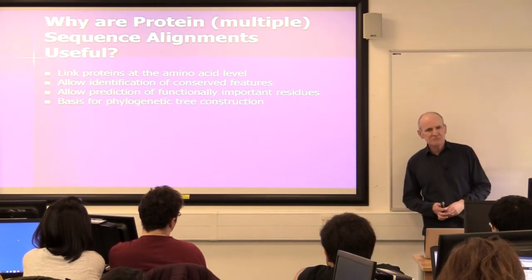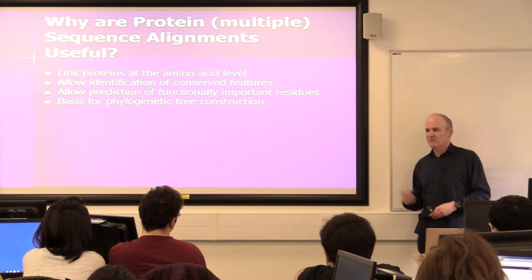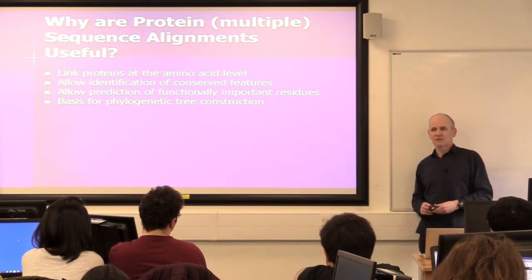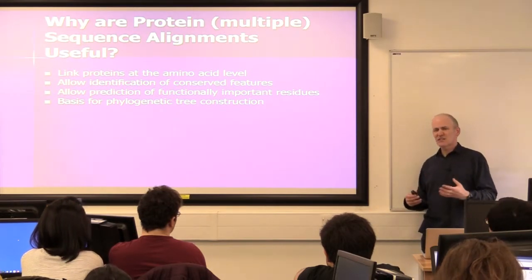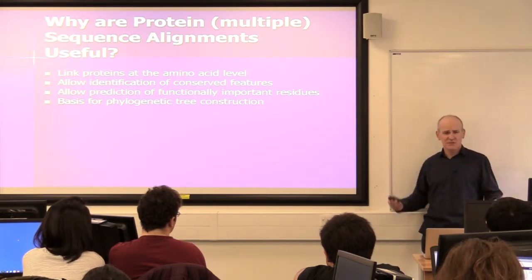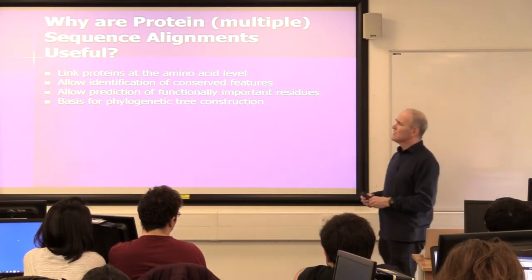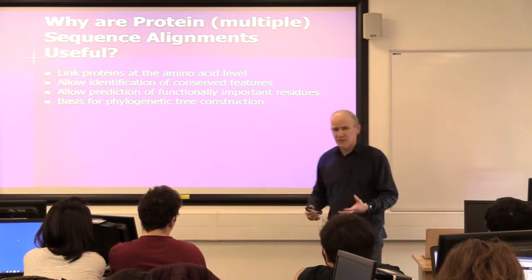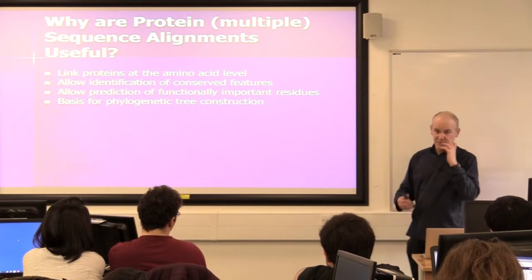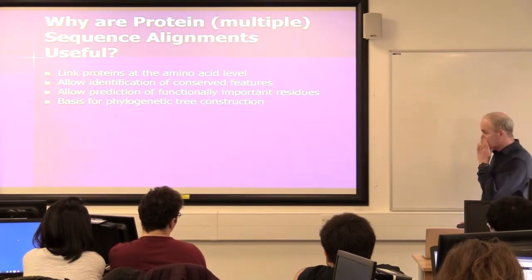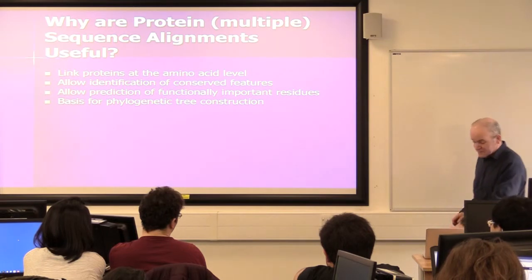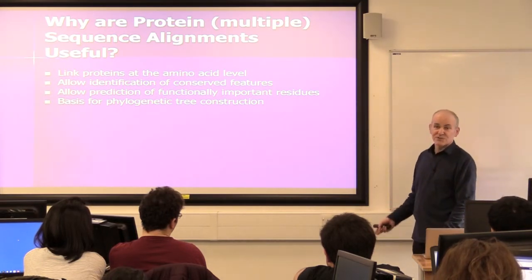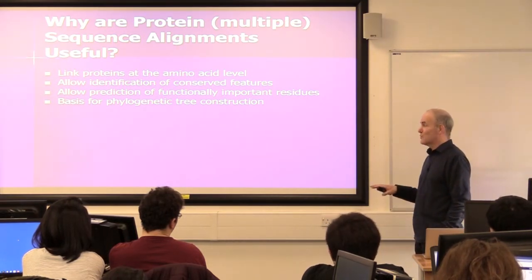Has anyone done any phylogeny? Made trees? Apart from what you did in Jalview last week. So phylogeny is a huge subject. People are always interested in building trees for their sequences. And the first thing you have to do to build a tree is build a multiple alignment. And so it's the starting point for that. If you get the alignment wrong, the tree's wrong. So it's really important to get it right.